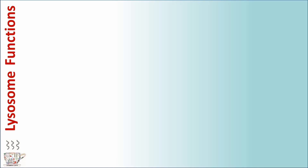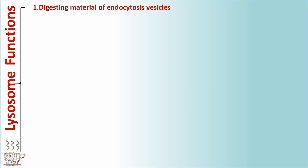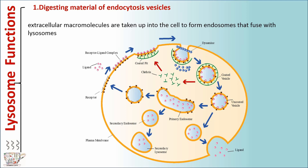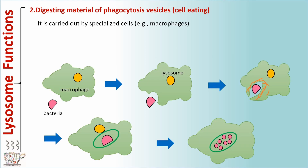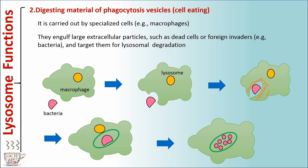Lysosome functions. The first function is digesting material from endocytosis vesicles. Extracellular macromolecules are taken up into the cell to form endosomes that fuse with lysosomes. The second function is digesting material from phagocytosis vesicles, or cell eating. It is carried out by specialized cells, for example macrophages. They engulf large extracellular particles, such as dead cells or foreign invaders, for example bacteria, and target them for lysosomal degradation.